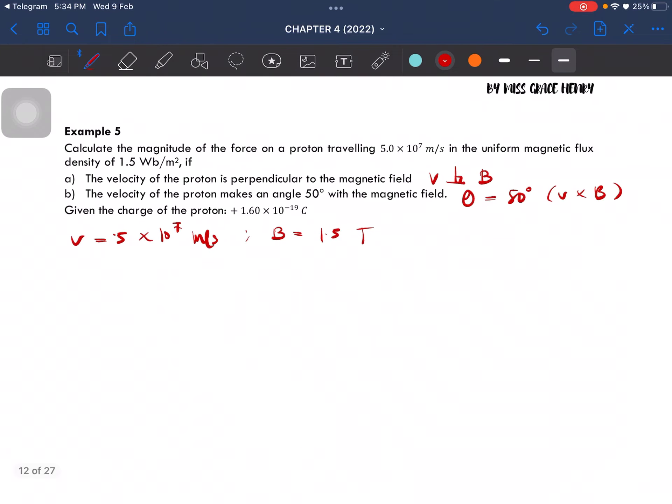Now for question A, the angle is equal to 90 degree. So we can use directly the equation sin theta which gives us 1.2 times 10 to the power of negative 11 Newton.